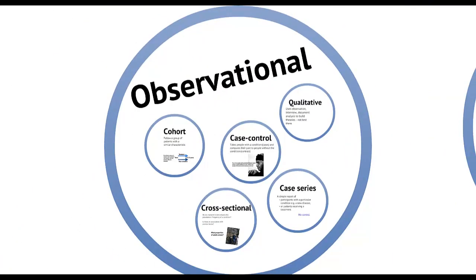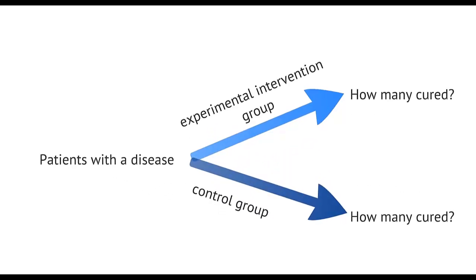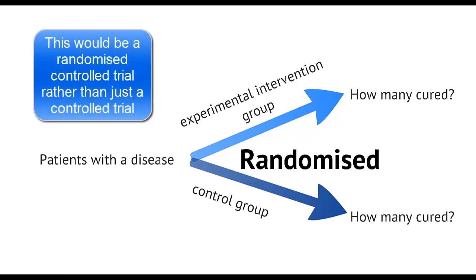Let's look at experimental designs. These study designs involve researchers intervening in some way, rather than just observing patients. Experimental studies always need a control, whether this is in the lab, clinic, or population. In a controlled trial, a group of patients who share a common characteristic, often a disease, are selected, and then some of them are given the experimental intervention and others are not. If the experimental intervention leads to more people being cured, we might conclude that it is better than the control. However, because of the risks of other factors causing the outcome, we prefer that controlled studies be randomized. Randomization is the strongest study design to establish a causal relationship between one variable and another.